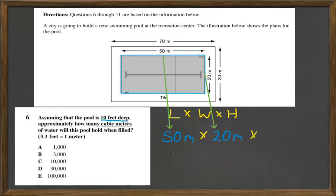It's 10 feet deep, but we need to have the answer in cubic meters. And they give us the conversion, 3.3 feet equals 1 meter. So we just need to divide the 10 feet by the 3.3 feet, and that gives us 3 meters.